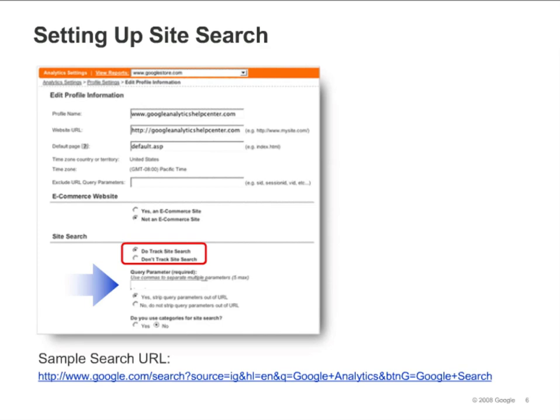To find out what the query parameter is, perform a search on your site. Normally, when a user searches on your site, their query can be found in the URL. For example, if you search on Google.com, you will see your search query preceded by Q equals. Therefore, Google's query parameter would be Q. In the sample search URL shown here, the query parameter is Q and the query was Google Analytics.